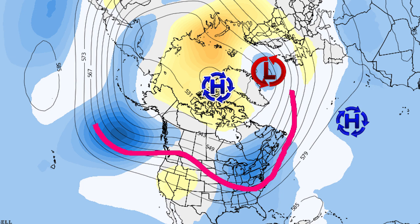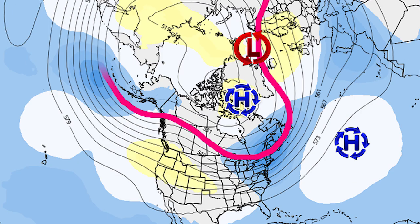Looking at the CFS monthly forecast graphics, starting out in October, you can see higher-than-normal anomalies near Greenland and northern Canada — this also correlates with the Arctic Oscillation, which leads to cold in the eastern United States. The Icelandic Low is located a bit to the east of where it normally is, and the Azores High shows lower anomalies than typical. This is a pretty classic negative NAO look, with negative heights over the eastern United States indicating colder-than-normal temperatures for October according to the CFS.